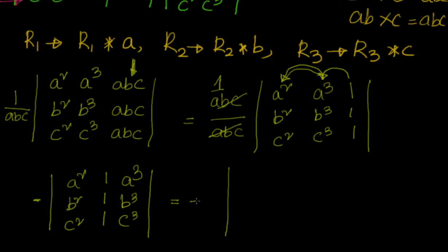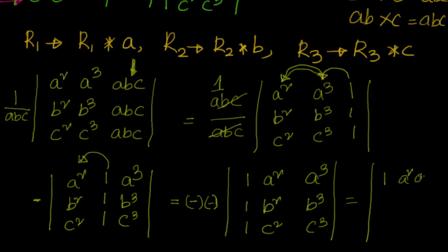Let's do it again. Minus into minus equals plus. Now I want to move from second to first column. So I have 1, 1, 1; A square, B square, C square; A cube, B cube, C cube. This is equal to minus into minus is plus. So whatever we need to prove: 1, A square, A cube; 1, B square, B cube; 1, C square, C cube.